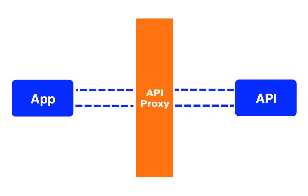Notice that all traffic between apps and your API flows through the API proxy. Having the API proxy in this key position gives your API access to pre-coded solutions that address the most common and complex interactions with your API.